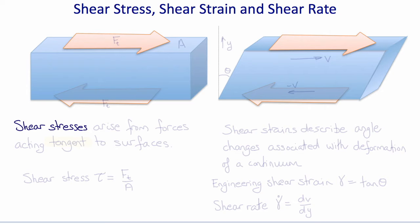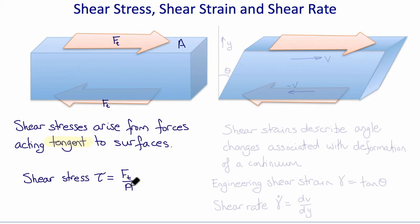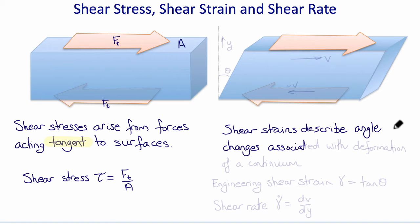There are other kinds of stress. For example, shear stresses arise from forces acting tangent to surfaces rather than normal to surfaces. So if we imagine forces acting tangent to these surfaces with area A, then the shear stress in this example, tau, is Ft divided by A — again with units of force per area, but now it's tangent forces per area.